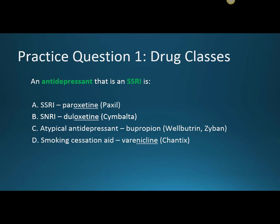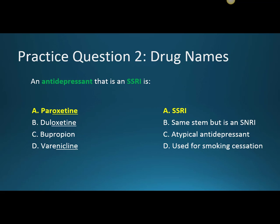Question one: An antidepressant that is an SSRI is — A, paroxetine; B, duloxetine; C, bupropion; or D, varenicline? The answer is A, paroxetine — it is an SSRI focused on serotonin. B is incorrect; duloxetine shares the '-oxetine' stem with some SSRIs but it is an SNRI, affecting both serotonin and norepinephrine. C is incorrect because bupropion is an atypical antidepressant working on dopamine and norepinephrine. D, varenicline, is incorrect because it is used for smoking cessation and works on nicotine receptors.